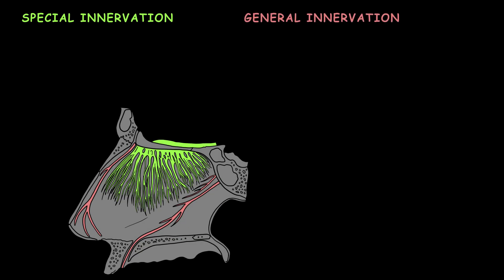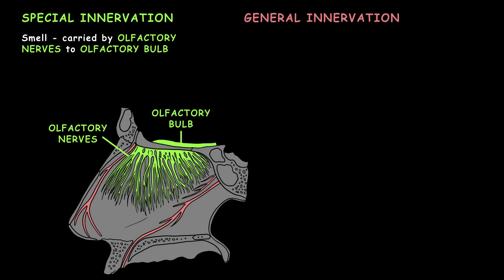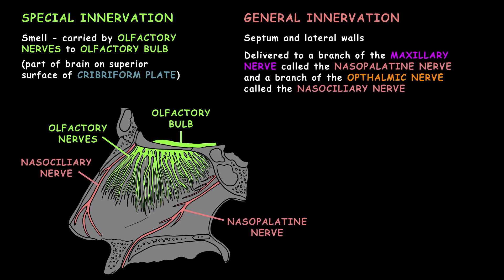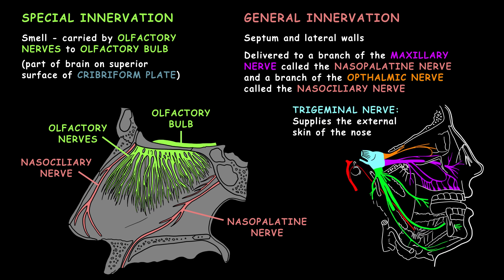Since your nose is used in olfaction, innervation is divided functionally into special and general innervation. Sense of smell is a kind of special sensory information, and it is carried by the olfactory nerves to the olfactory bulb, a part of the brain on the superior surface of the cribriform plate over top of the nasal cavity. General sensory innervation to the septum and lateral walls is delivered by a branch of the maxillary nerve called the nasopalatine nerve, and a branch of the ophthalmic nerve called the nasociliary nerve. The trigeminal nerve supplies the external skin of the nose.